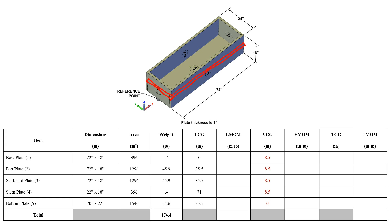For the transverse center of gravity, only the port and starboard plates will have a transverse distance because their mid-planes do not lie on the barge's center line. It is important to note that since the port plate is on one side of the coordinate axis, its transverse dimension will be negative. I'm looking for the mid-plane of the port plate, and that doesn't lie on the center line of the barge like the mid-plane of plate 1 or the mid-plane of plate 4.